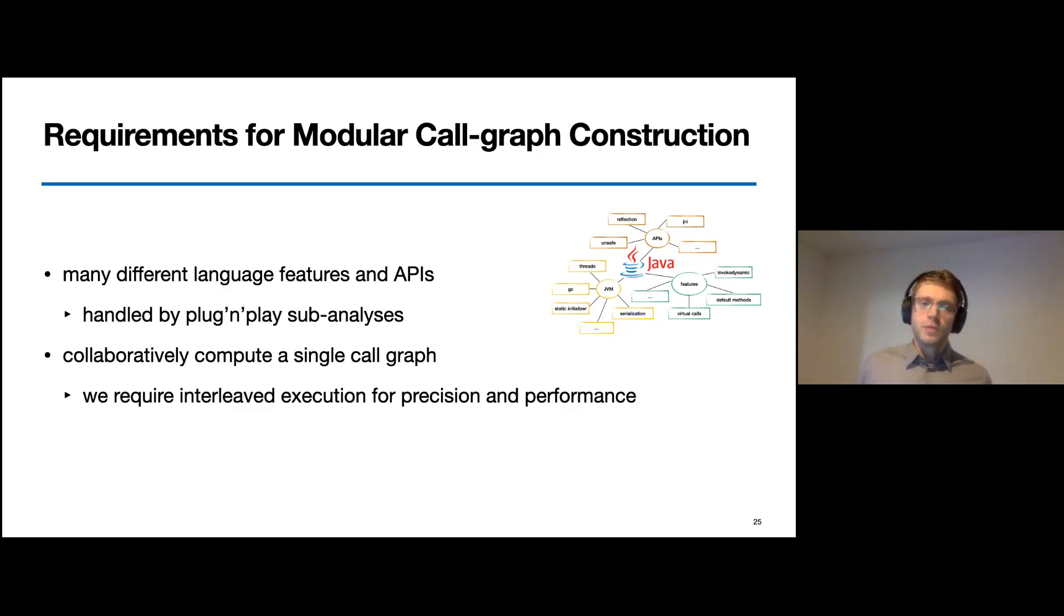Then, we need to combine the results of all those sub-analyses to compute a single call graph. And yet, for the sake of performance and precision, when composed, the analyses need to be executed in an interleaved way. So, the question is, how can we design such an architecture that supports these requirements?